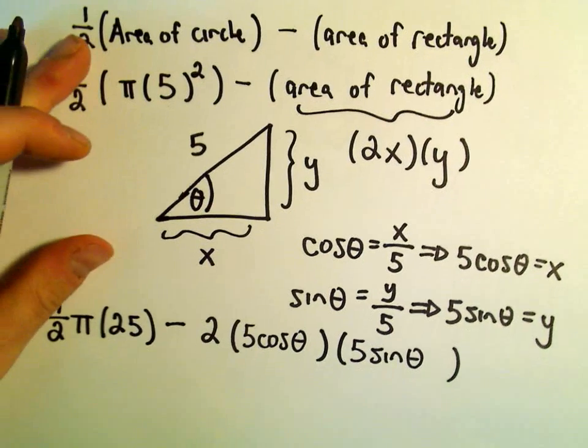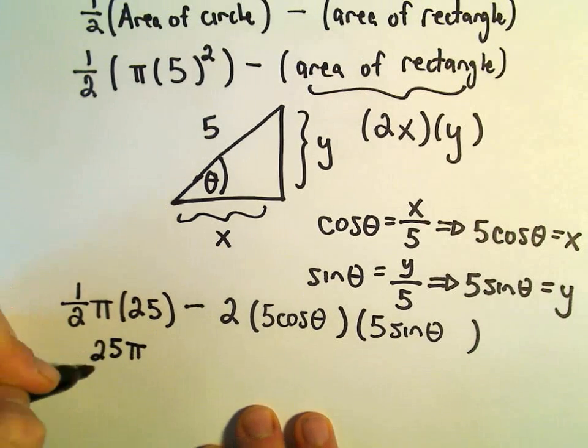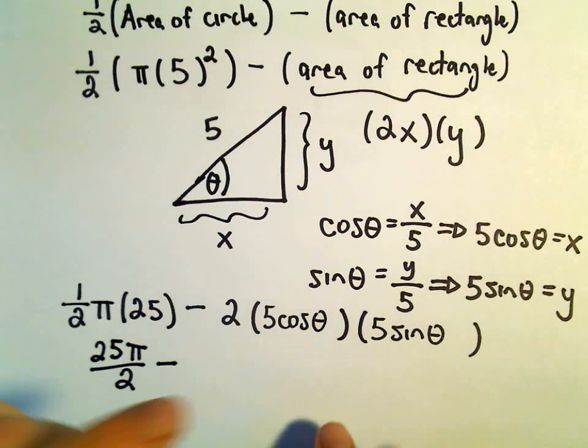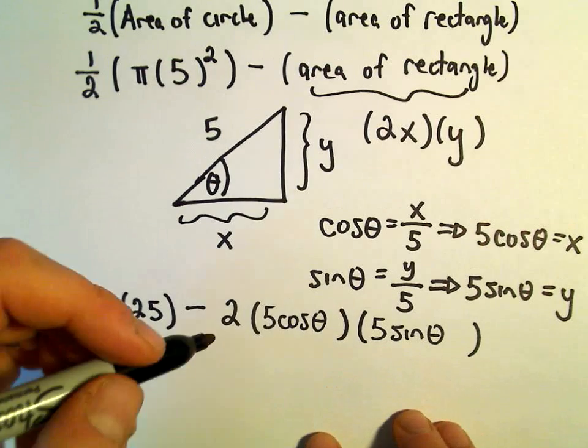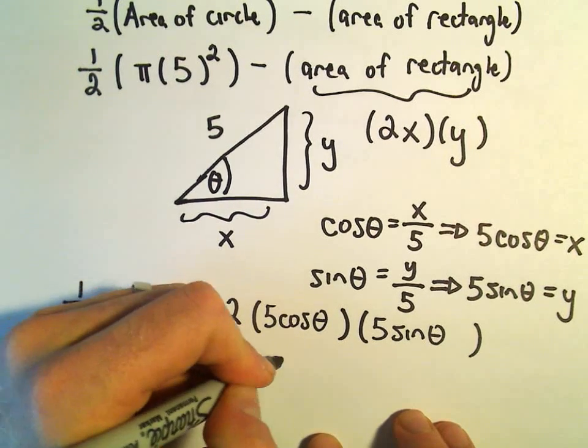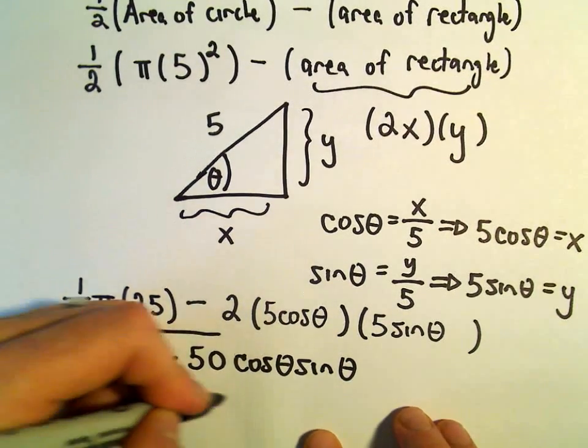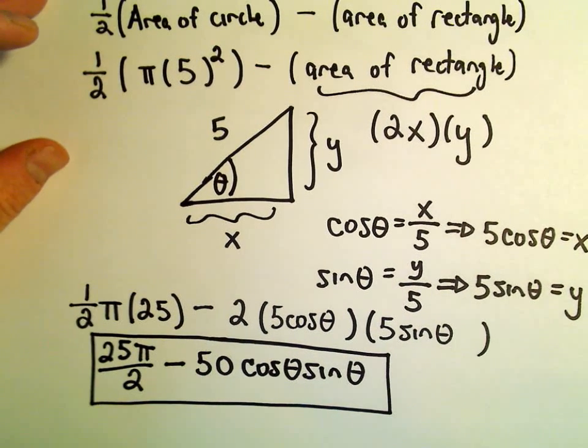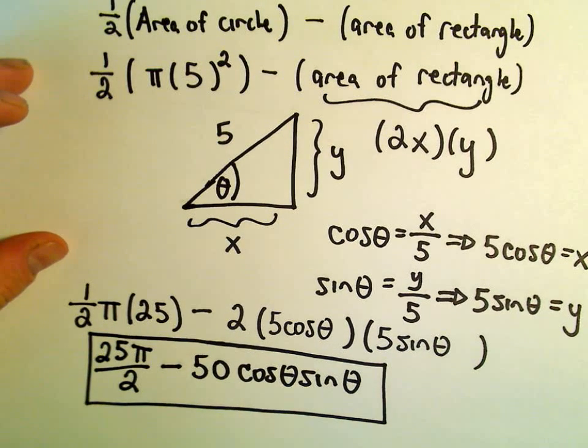And now we've got our expression. So maybe we can clean this up a little bit. This would be 25 pi over 2, our first term, minus, let's see, we would get 5 times 5 is 25, times 2 will be 50. So we'll end up with negative 50 cosine theta times sine theta. And now we do have an expression that tells us exactly the value of that shaded area, all in terms of our angle theta.